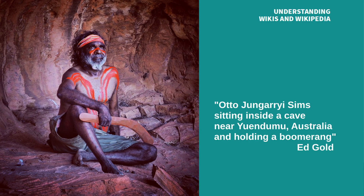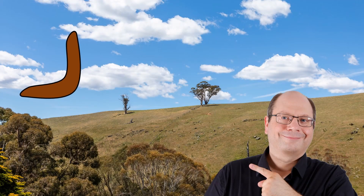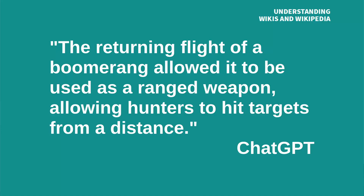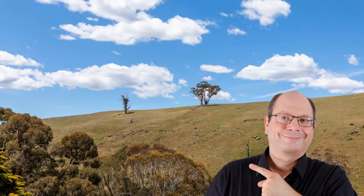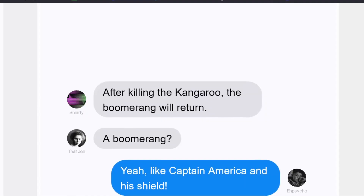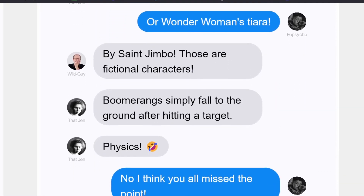Another problem: the AI text describes boomerangs only as part of the tradition of the Aborigines. It does not mention all those similar throwing sticks in other cultures around the world. According to the AI text, it also looks as if all boomerangs return to the thrower — that is not the case. Most boomerangs of the Aborigines fly straight in order to hit a target. The AI text describes the boomerang as a hunting weapon like this: "The returning flight of a boomerang allowed it to be used as a ranged weapon, allowing hunters to hit targets from a distance." That sounds strange, as if you can hit a target and then the boomerang still returns to you. In my limited understanding, some boomerangs are designed to fly straight to hit a target, others are designed to return — a boomerang does not do both things at the same time.